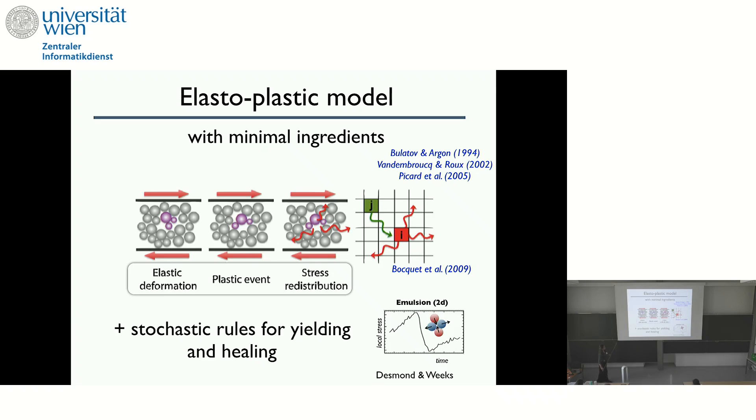The very simple model only includes an elastic deformation, which is homogeneous. Then you have the possibility of creating plastic events in the system when you're above a local yield stress. And these local plastic events lead to stress redistribution that then can trigger other events. And this is combined with some stochastic rules for yielding and healing. So here's an example of an experimental system of a 2D emulsion where they show the local stress as a function of time. And you see this elastic part, noisy elastic part, then you see the yielding and after some time the region heals because this emulsion is not breaking, there's no permanent damage like in Suzanne's model before. And so you recover elasticity locally.